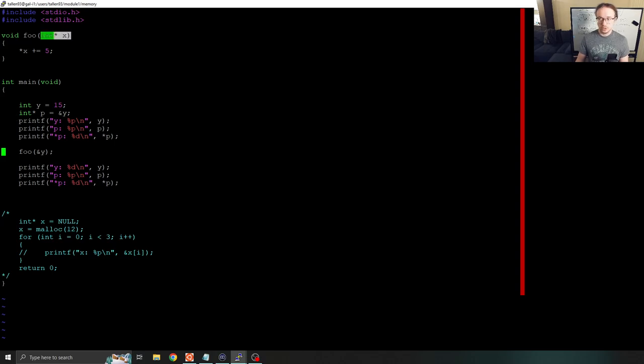Foo takes an integer pointer argument and changes it. We say star x, so dereference x plus equals 5. So you should think real quick for a second before we run this, what do we think the output of this program is going to be? Well, y is 15, p should be the address of y, and star p, because p points to y, should also be 15. And then we're going to pass in the address of y here, and then we're going to print out y, p, and star p again. So let's see what happens here.